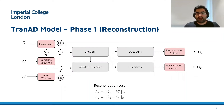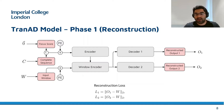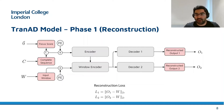Let me now introduce the transformer model used for predicting a reconstruction of an input window. In the first phase, we take an input window W and the complete sequence until the current time step C. The complete sequence is concatenated with a zero vector, positionally encoded, and passed to a transformer encoder, which encodes the complete history into a single embedding.